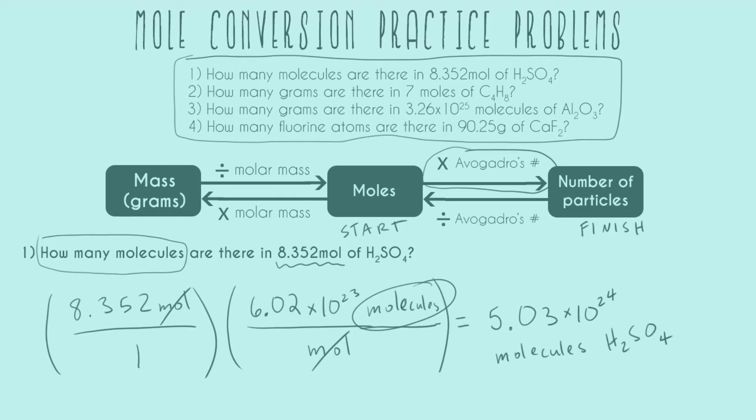And our units are molecules of H2SO4. I used three sig figs because we had four from our number of moles and we had three from Avogadro's number. So your teacher may or may not expect you to use sig figs with Avogadro's number, but it is technically a measurement, so it does have sig figs. And so this was our limiting factor in this case. So I was allowed to have one, two, three sig figs for my final answer.